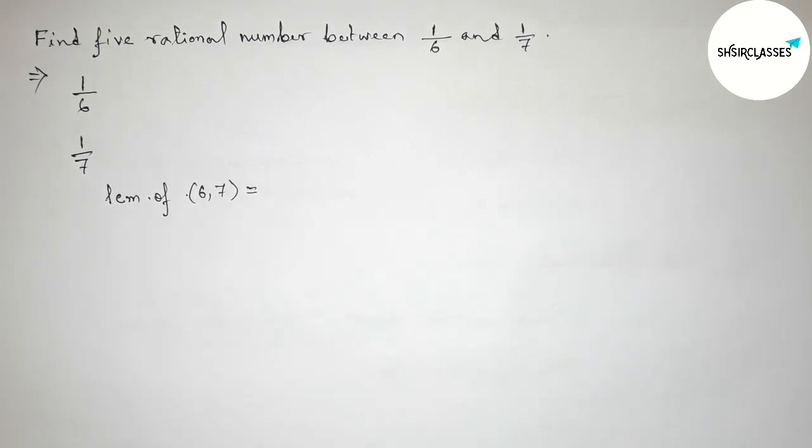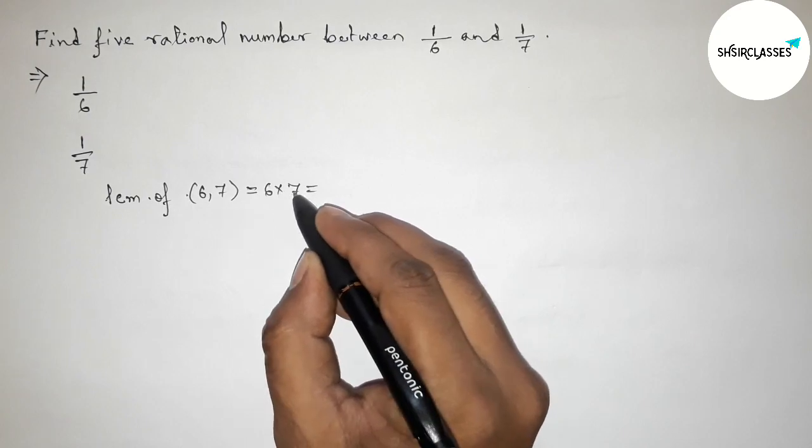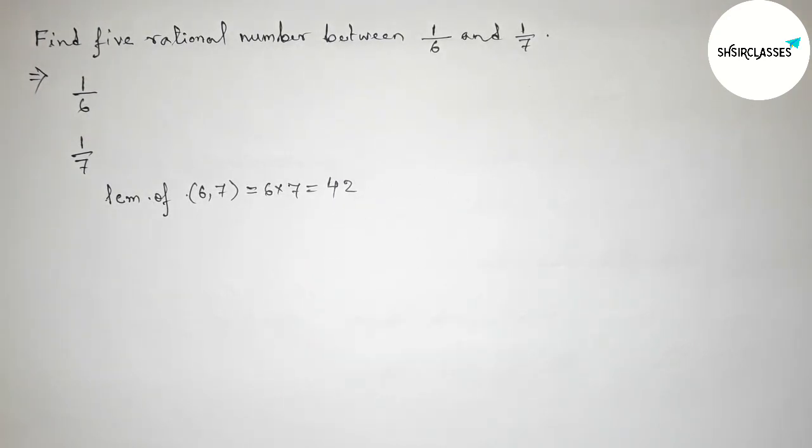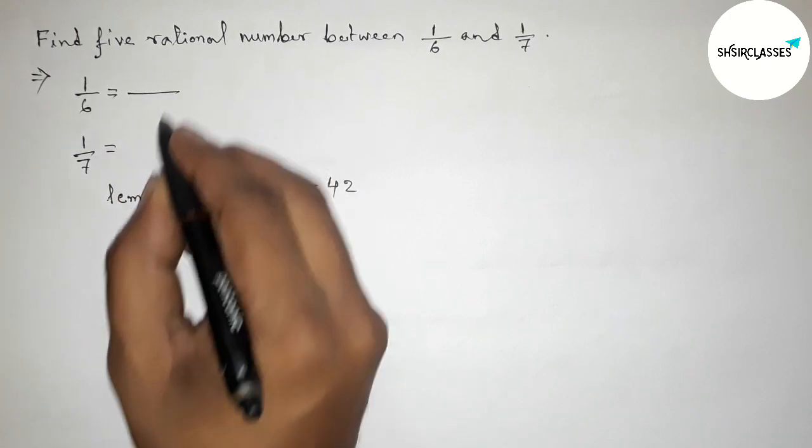First, find the LCM of 6 and 7. Since 6 and 7 are prime to each other, their LCM will be their product: 6 × 7 = 42. We have to make the denominator equal to 42.